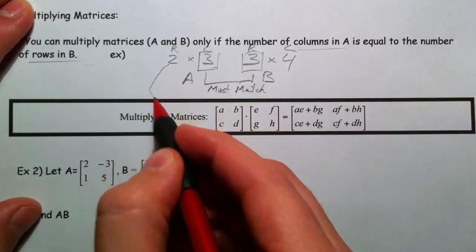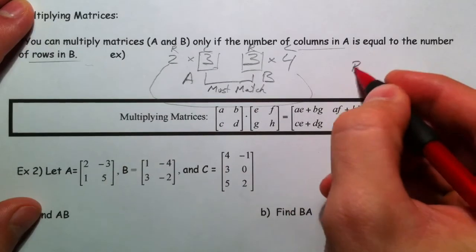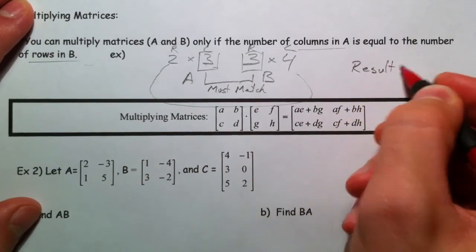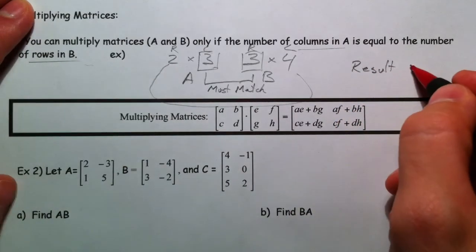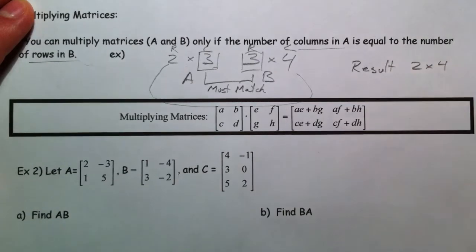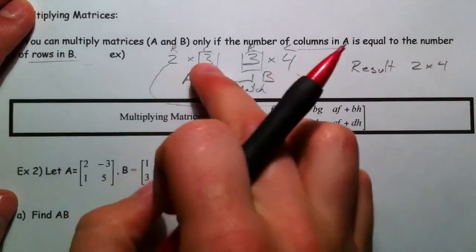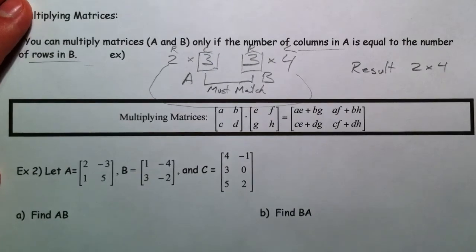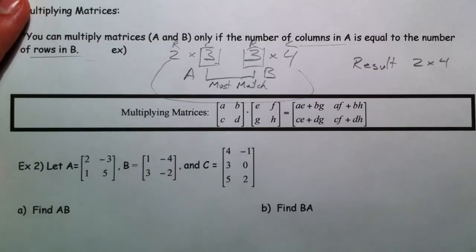And then these give you the result. 2 by 4 is the result of multiplying a 2 by 3 and a 3 by 4. So sometimes you won't be able to multiply them.